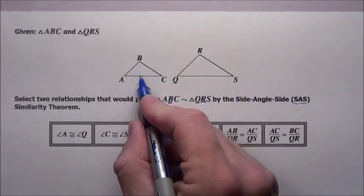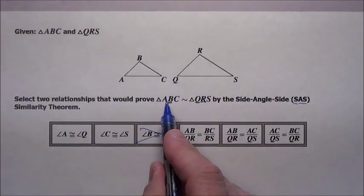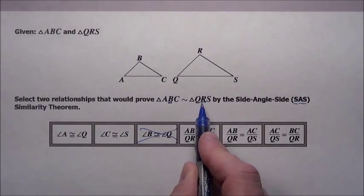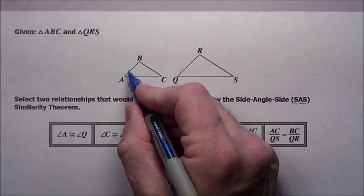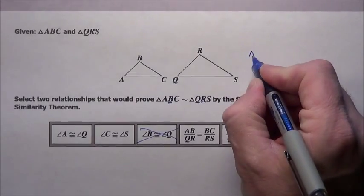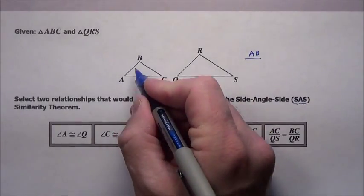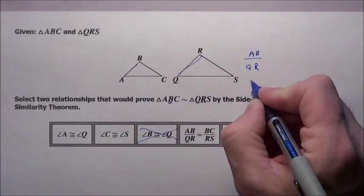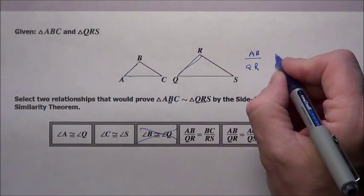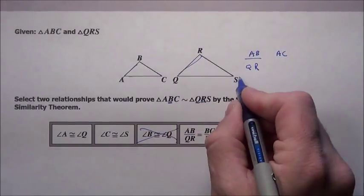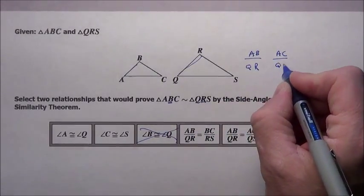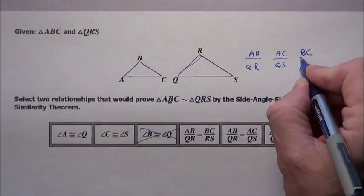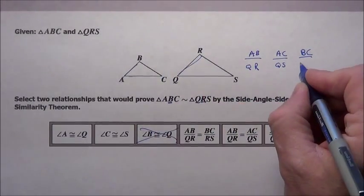Here's what we know. If these are going to be similar, and the way they wrote it, ABC to QRS, A matching Q's, B's matching R's, C matching S's. I know AB has to correspond to QR. Those sides have to correspond. I know I need AC corresponding to QS. And then finally, I need the BC side corresponding to the RS side.